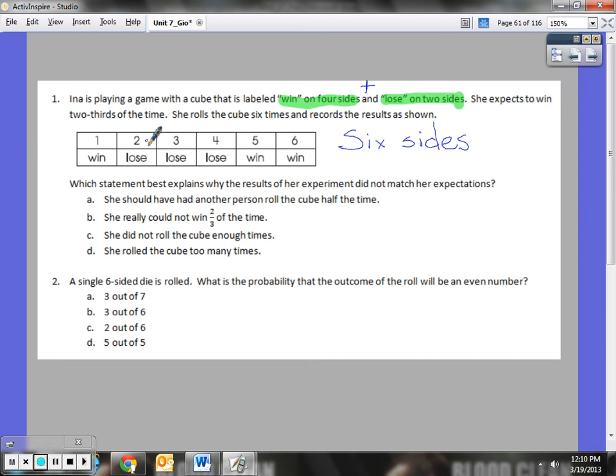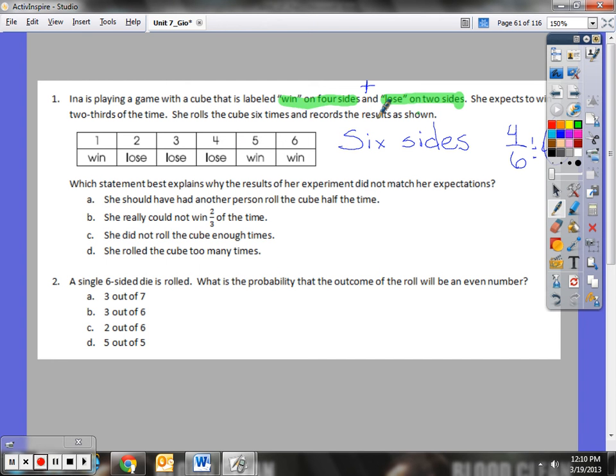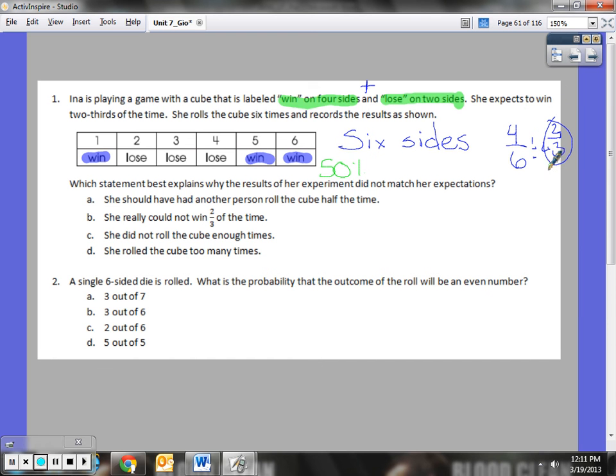She expects to win two-thirds of the time because she has four out of six being a win, which can reduce to two-thirds. That's why she's expecting to win two-thirds of the time. Now if I go through here, I'm going to highlight the ones in green that she won. So that's a win, that's a win, and that's a win. And then she had losses three times. So actually she only won 50% of the time, yet she was expecting to win two-thirds of the times, or that is sixty-six percent of the time.